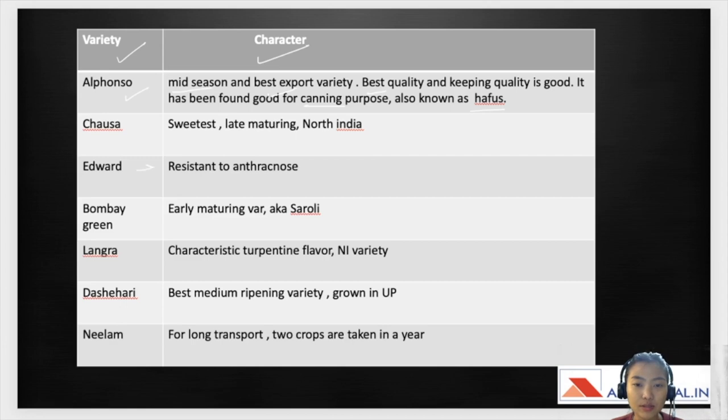Edward is resistant to anthracnose. Bombay Green is an early maturing variety also known as Saroli. Langra is famous for its characteristic turpentine flavor and it is a North Indian variety. Dasheri is the best medium ripening variety and it's usually grown in UP. Neelam is good for long transport and two crops are taken in a year.